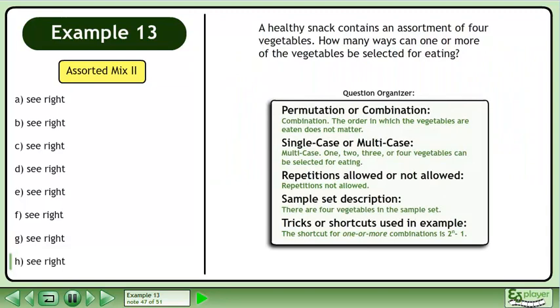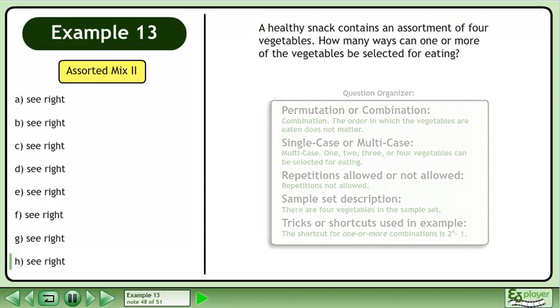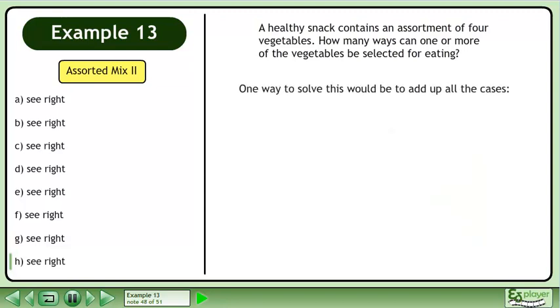Pause the video and organize the information about this question. One way to solve this would be to add up all the cases. Four choose one, plus four choose two, plus four choose three, plus four choose four, equals 15.